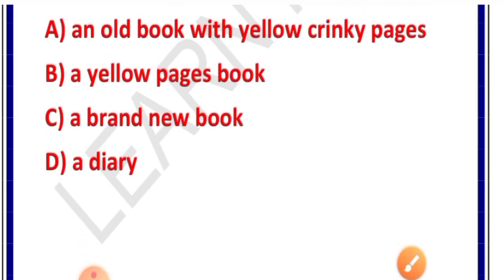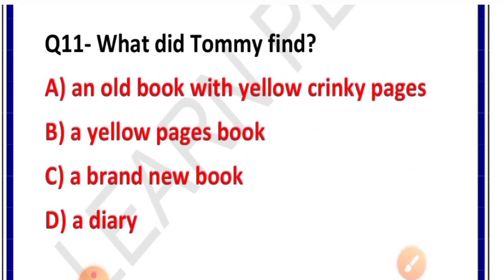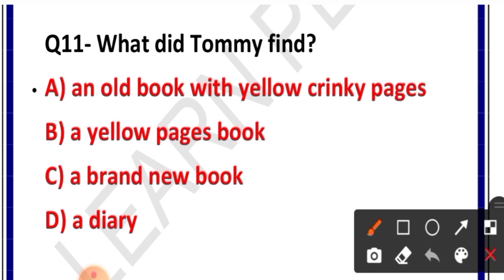Question number 11: What did Tommy find? Options: A. An old book with yellow crinkled pages, B. A yellow pages book, C. A brand new book, D. A diary. Correct answer is option A — an old book with yellow crinkled pages. Ek purani pustak mili thi jiske pages yellow ho gaye the aur cut-fat rahe the.